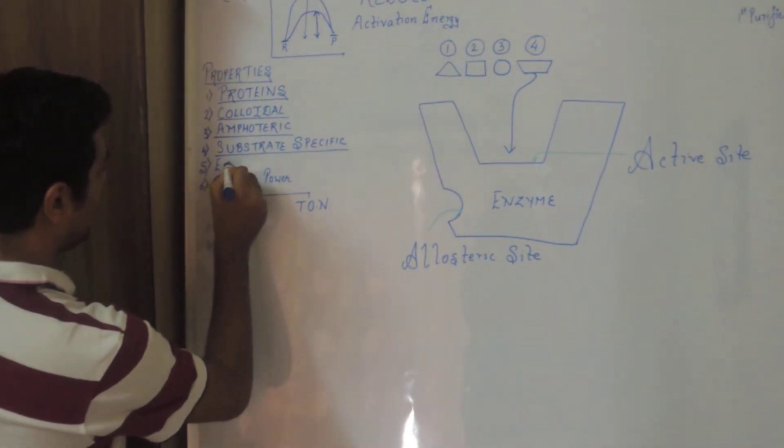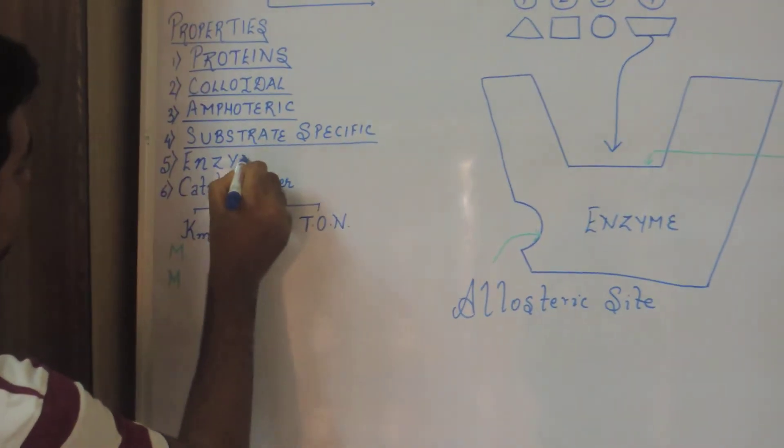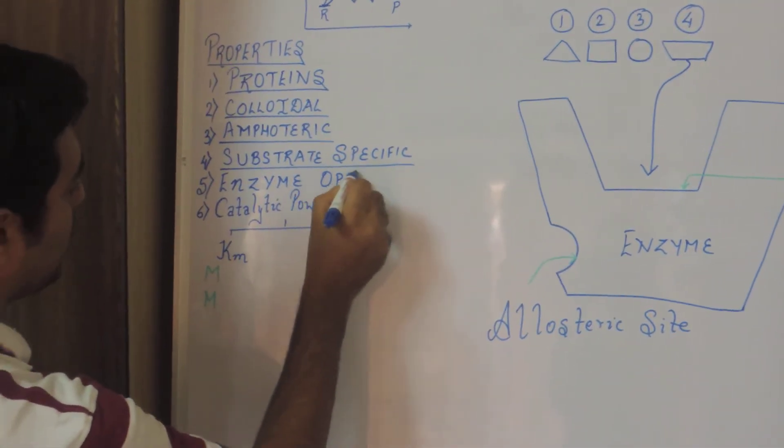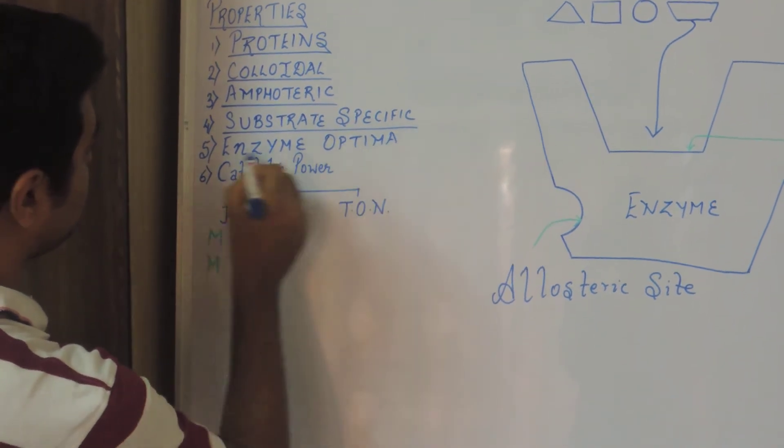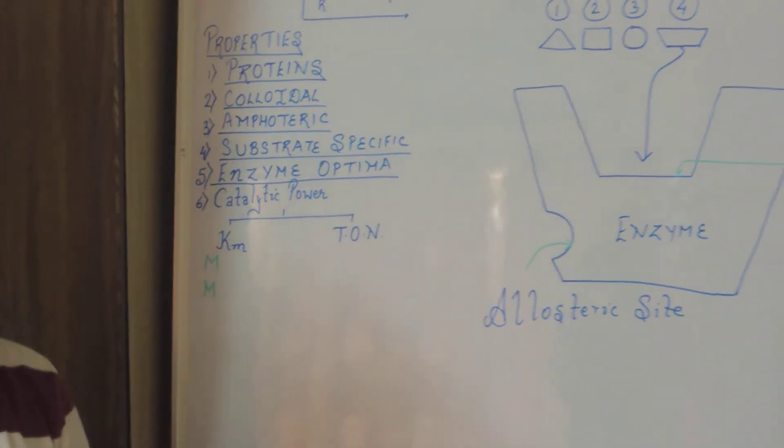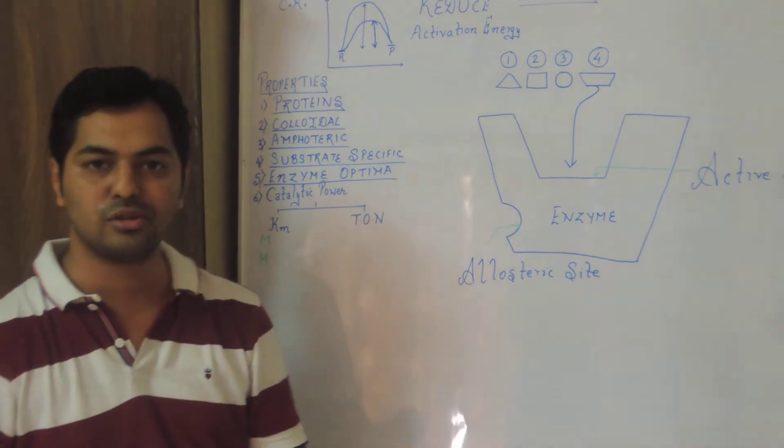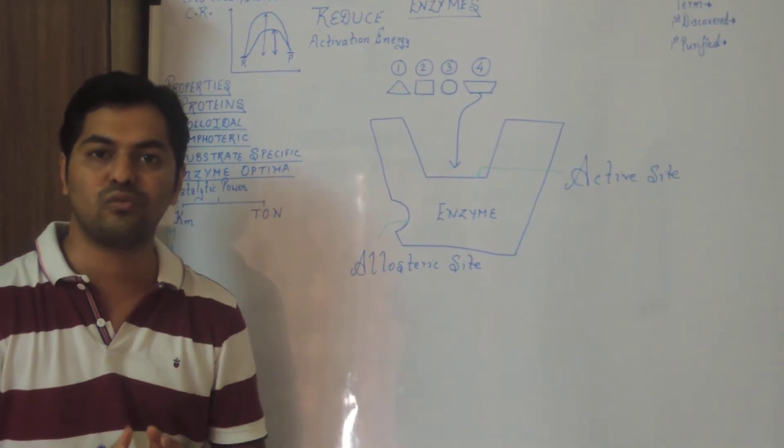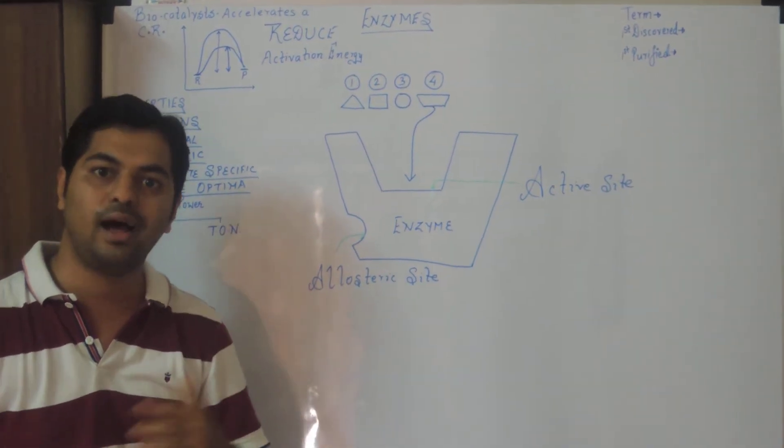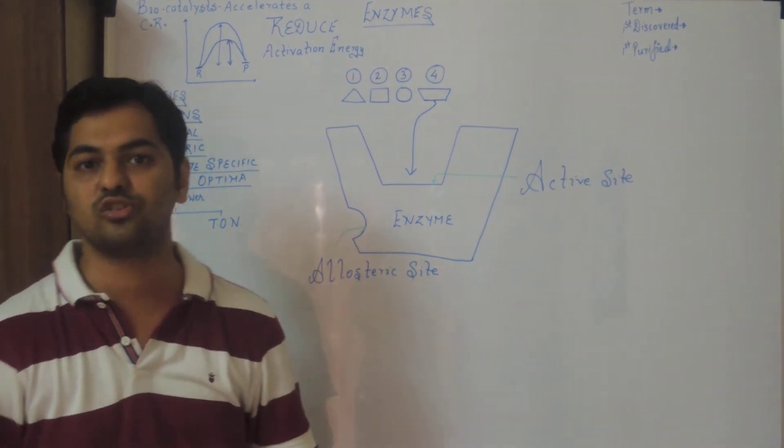Last property that is known as enzyme optima. Optima meaning 100% functioning. Now enzymes can function best at a particular pH and particular temperature only. It cannot work in extreme pH and extreme temperature. Because at high temperature we are aware that enzymes get destroyed.